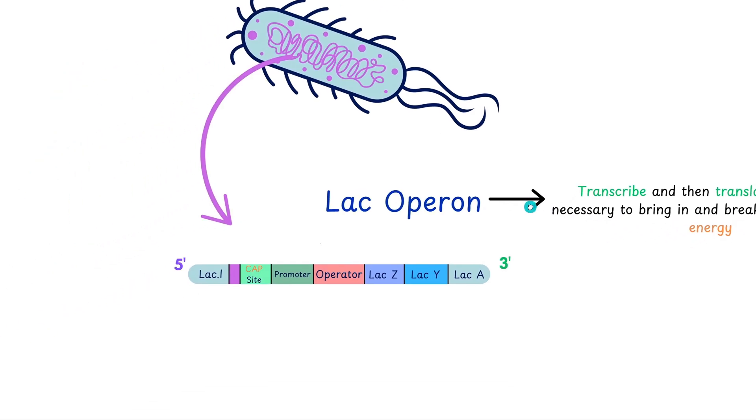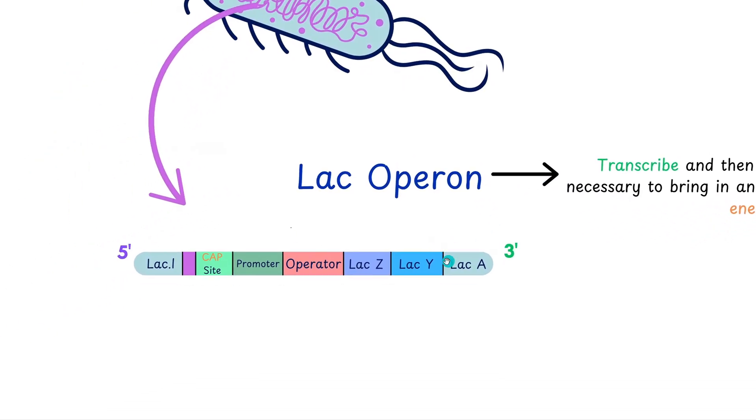This is what the lac operon looks like. We have the 5' upstream and 3' downstream regions. Starting from the upstream, we have lac I, which codes for our repressor. This repressor binds to the operator region on the lac operon. Then we move on to the structural genes, the components that we're actually trying to transcribe, which are lac Z, lac Y, and lac A.